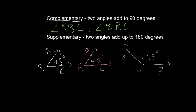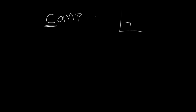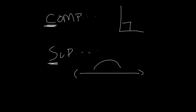Another term we have is supplementary. Supplementary are two angles that add up to 180. So angle ABC is 45, and angle XYZ is 135. If we add those two together, we're going to get 180. So we can say angle ABC and angle XYZ are supplementary because they add to 180. To help remember the difference: complementary has a C — think of a corner, which is 90 degrees. Supplementary has an S for a straight line, which has 180 degrees. Also, C is earlier in the alphabet, so that's the smaller one — 90 degrees. S is later in the alphabet, so that's the bigger one — 180.